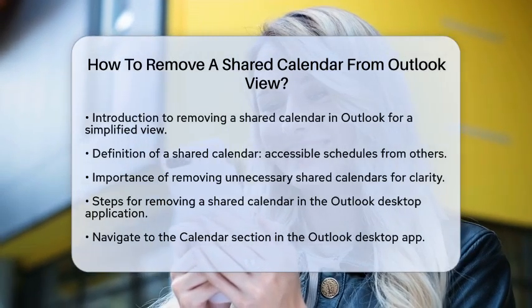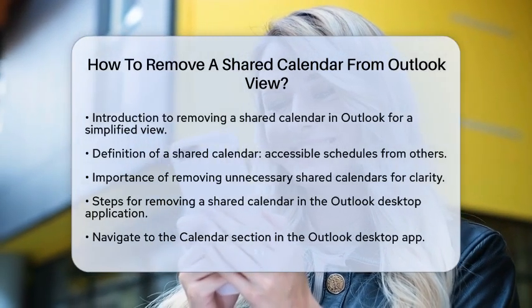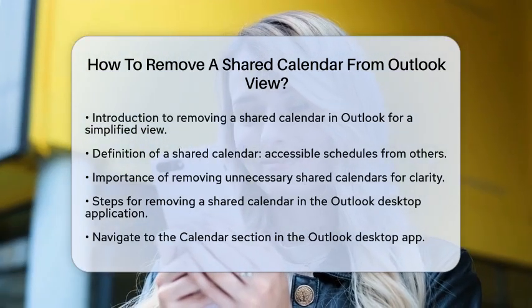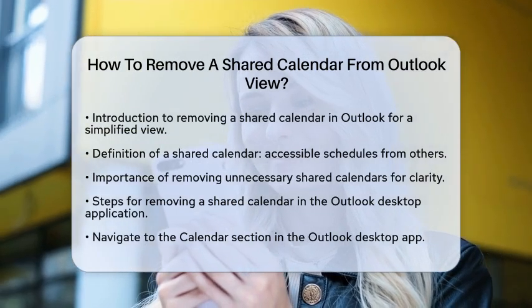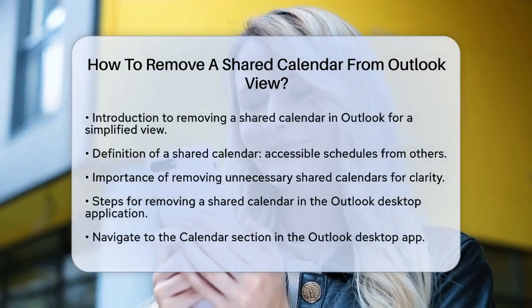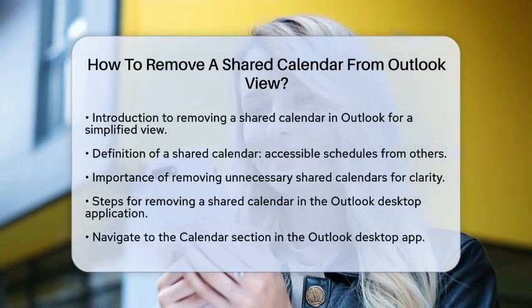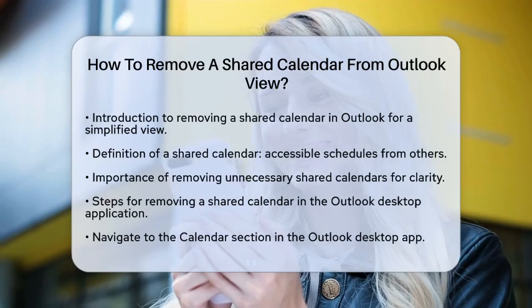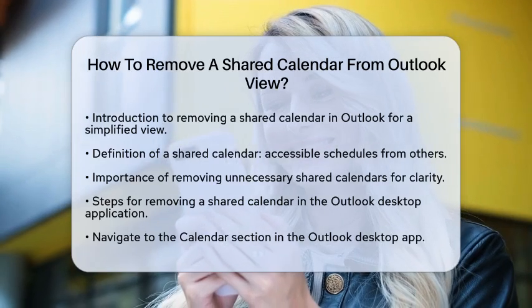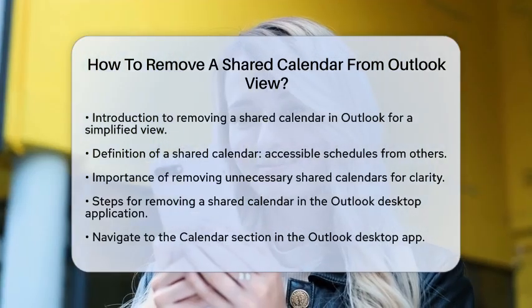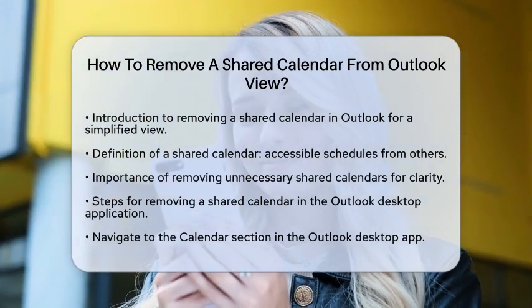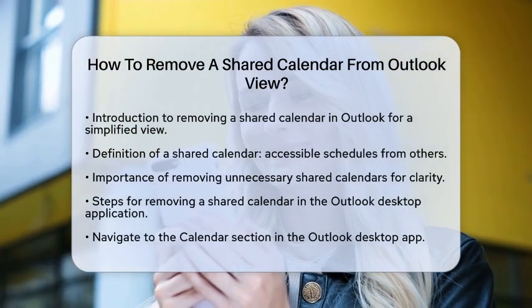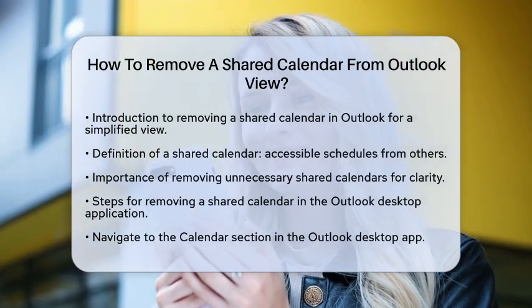First, it is important to understand what a shared calendar is. A shared calendar in Outlook is one that someone else has made accessible to you, meaning you can view their schedule alongside your own. However, if you no longer need to see that calendar, removing it is a simple process.